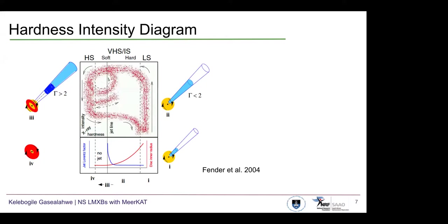In this phase the jet is still persisting and the inner disk radius decreases. Then through the third section, sources approach the jet line, reaching the highest Lorentz factor. And then the soft part of the very high intermediate state is reached in the last section — this is the high soft state where there is no jet observed and the inner disk radius is at its most minimal, as close to the central source.